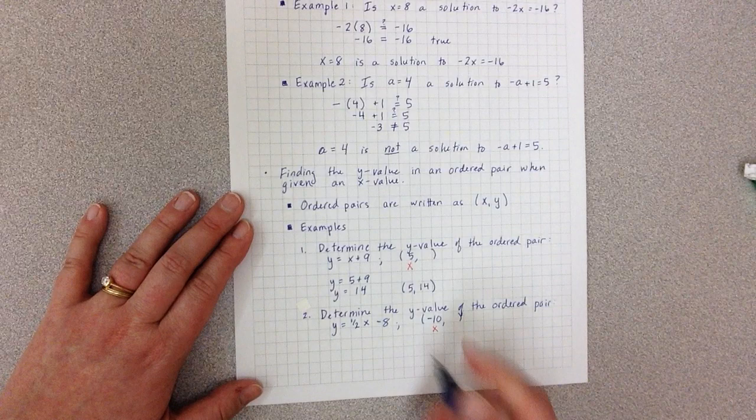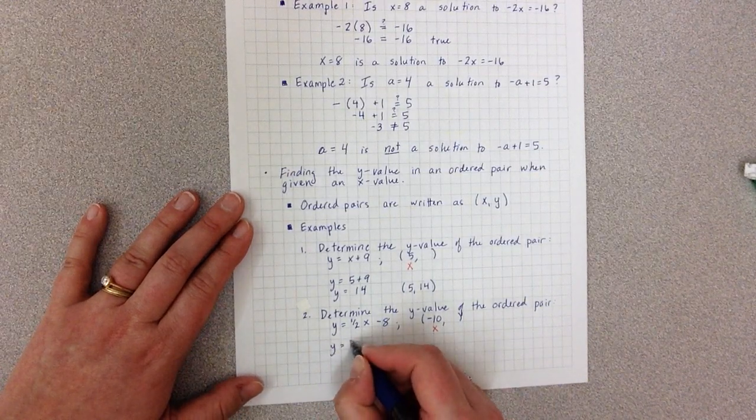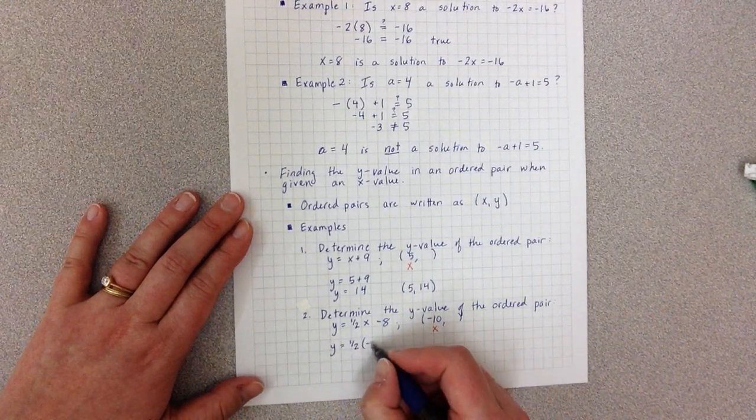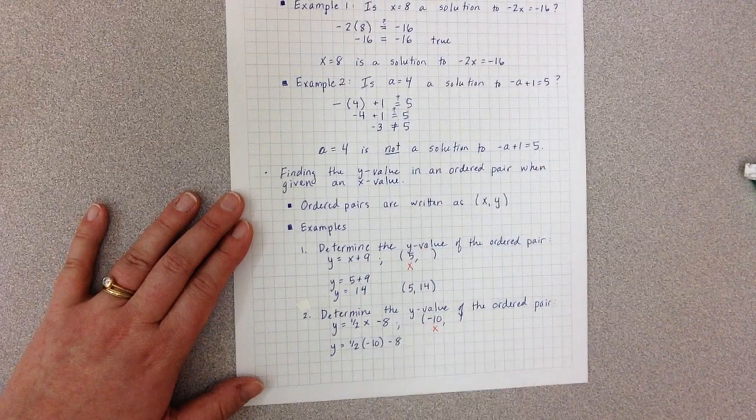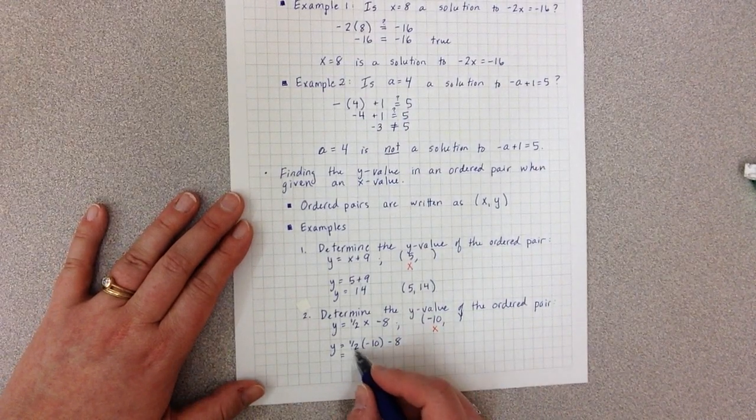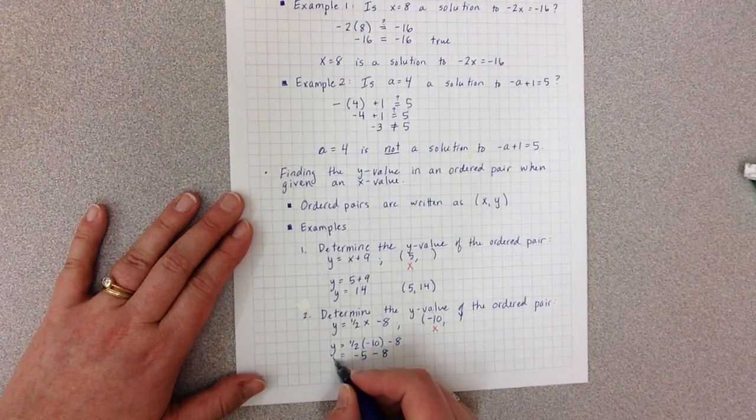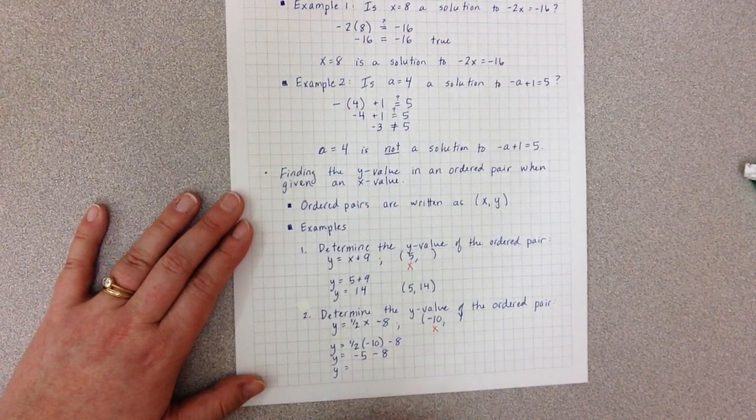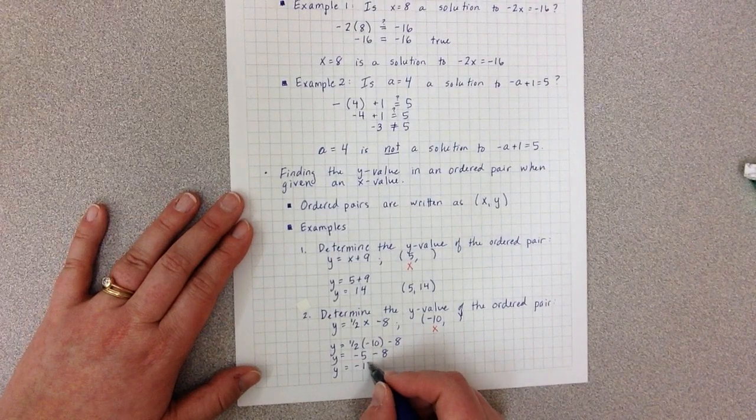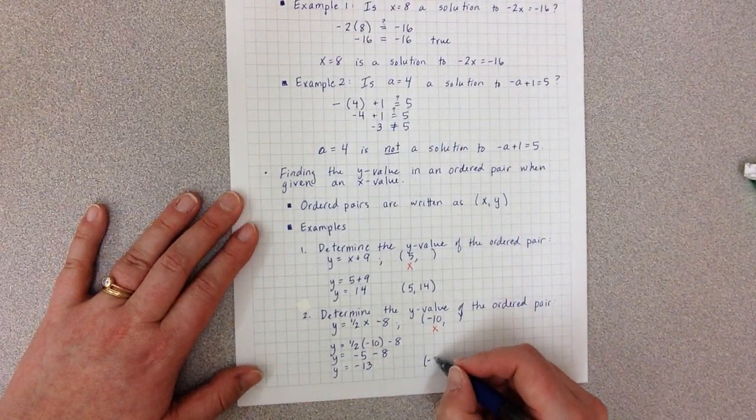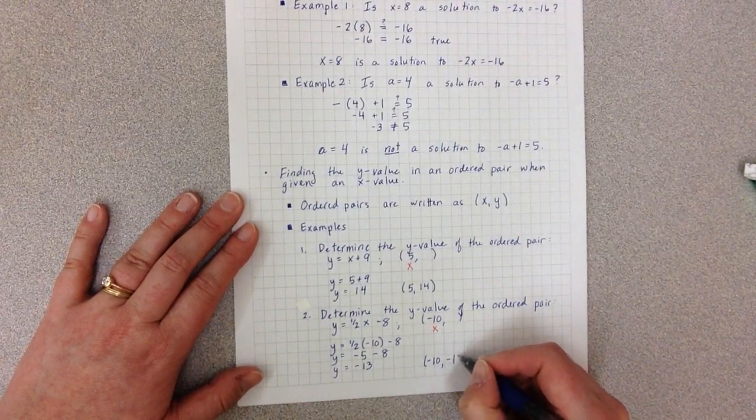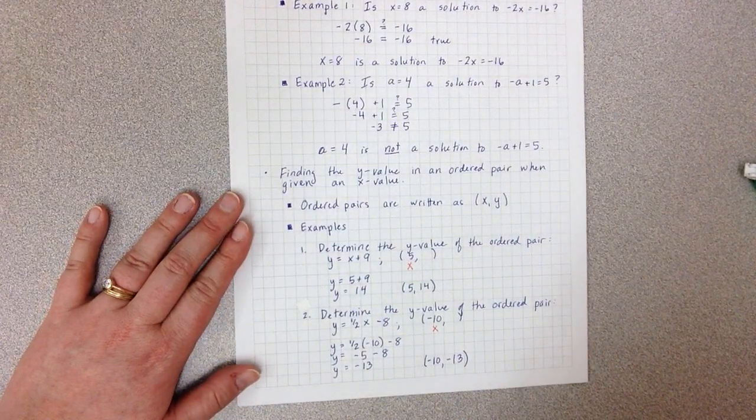And so I want to substitute that in. So y equals 1 half times negative 10 minus 8. I'm going to simplify this. 1 half of negative 10 is negative 5. Still have my minus 8. And then negative 5 minus 8 is negative 13. So my ordered pair, my point, is negative 10, comma, negative 13.